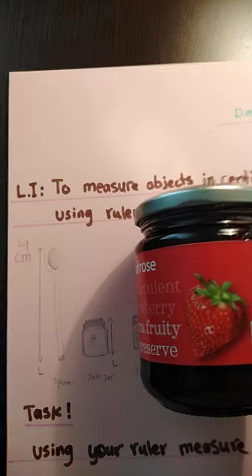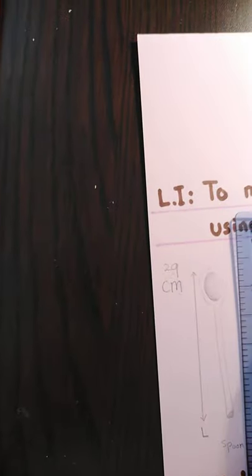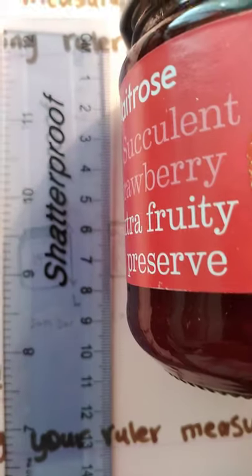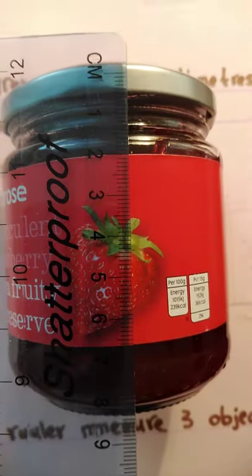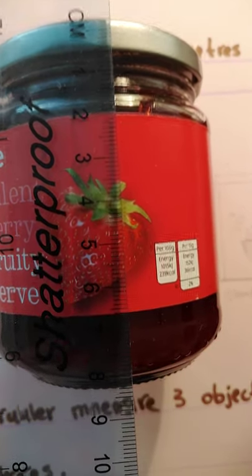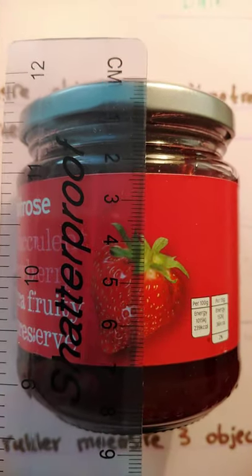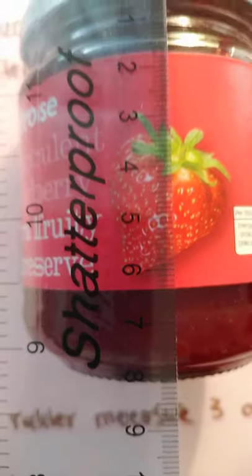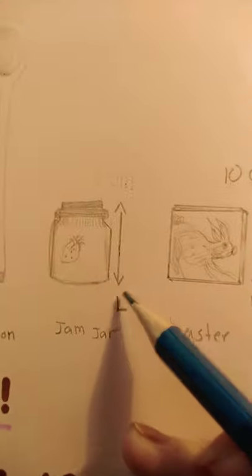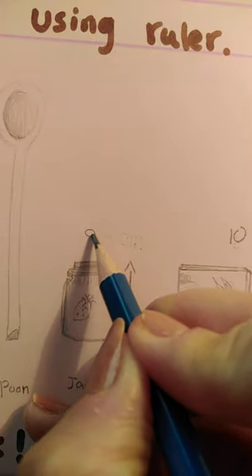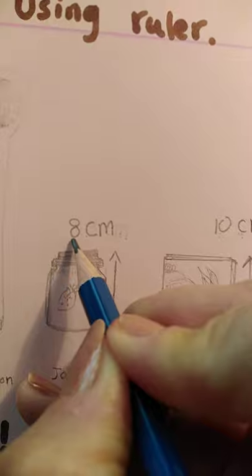This is the jam jar. Because it's not a flat object, we are going to put the ruler on the top of the jar. Starting from zero always, counting how many — it's eight centimeters. I'm going to record my measurement. This is my jar, this is the length, and it is eight centimeters.